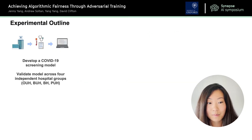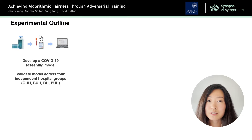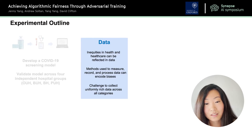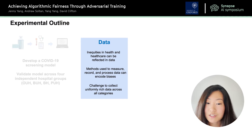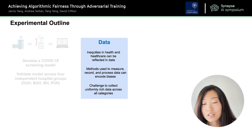To create this screening model we obtained data from four independent groups. This is good as we'll have a lot of data to train our models with and we'll also be able to show the generalizability of our model as we can externally validate across multiple locations. However, clinical data does have some issues. There are inequities in health and healthcare that can be reflected in the data, the methods used to measure, record, and process data can encode biases, and there's also a challenge in collecting uniformly rich data across all categories and demographic groups.